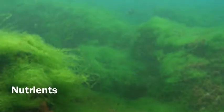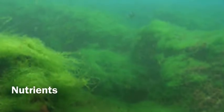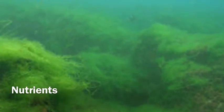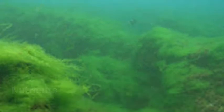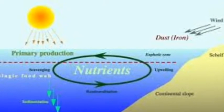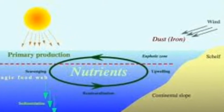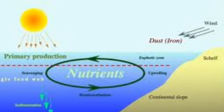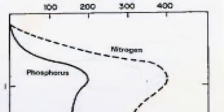Nutrients also affect life in aquatic ecosystems because certain organisms need them to live. These include oxygen, nitrogen, potassium, and phosphorus.